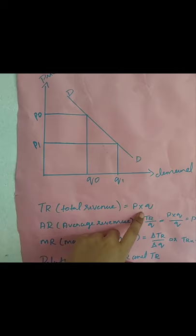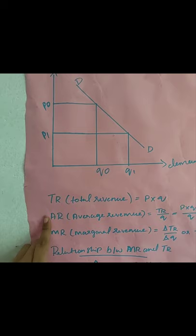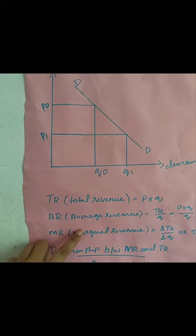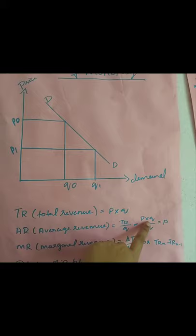Average revenue is revenue per unit of output sold. AR is calculated by dividing TR by quantity of output sold. Therefore, AR equals P×Q divided by Q, which equals P.